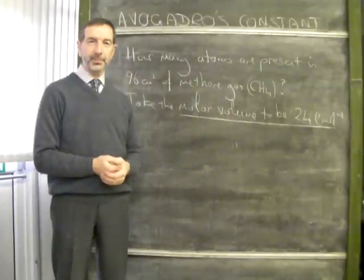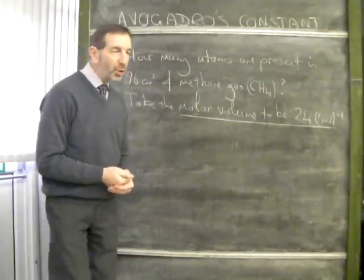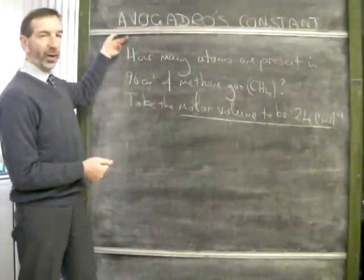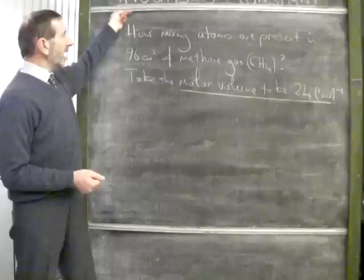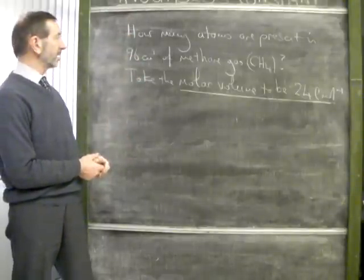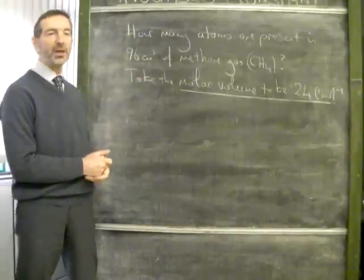Take two. Here's the more difficult Avogadro's constant question. It says, how many atoms are present in 96 cubic centimeters of methane gas?